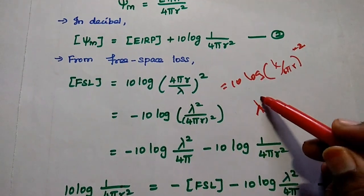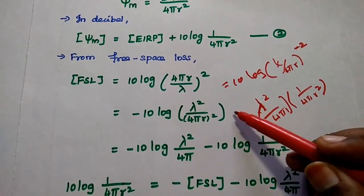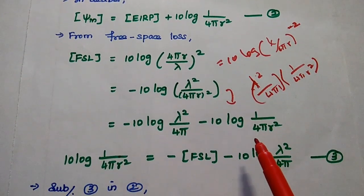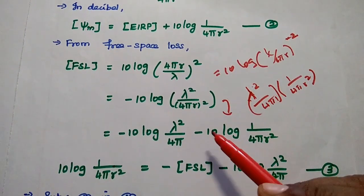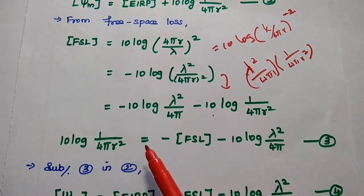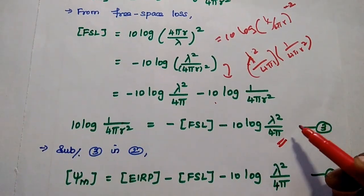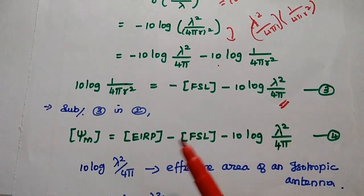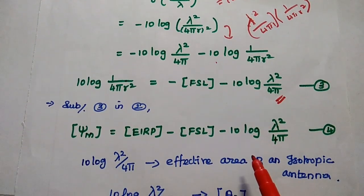The term λ²/4π represents the effective area of an isotropic antenna, and 1/4πR² is a separate term. Rearranging, we get: 10·log(1/4πR²) = −FSL − 10·log(λ²/4π). Substituting this third equation into the second equation gives: ψ_M = EIRP − FSL − 10·log(λ²/4π). This is the fourth equation.